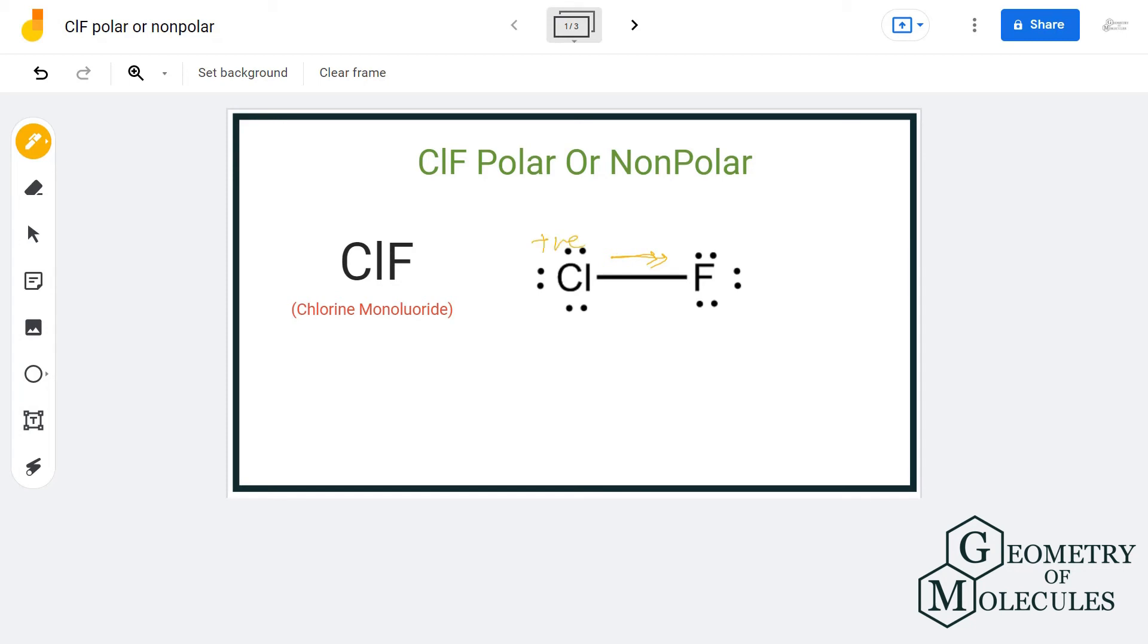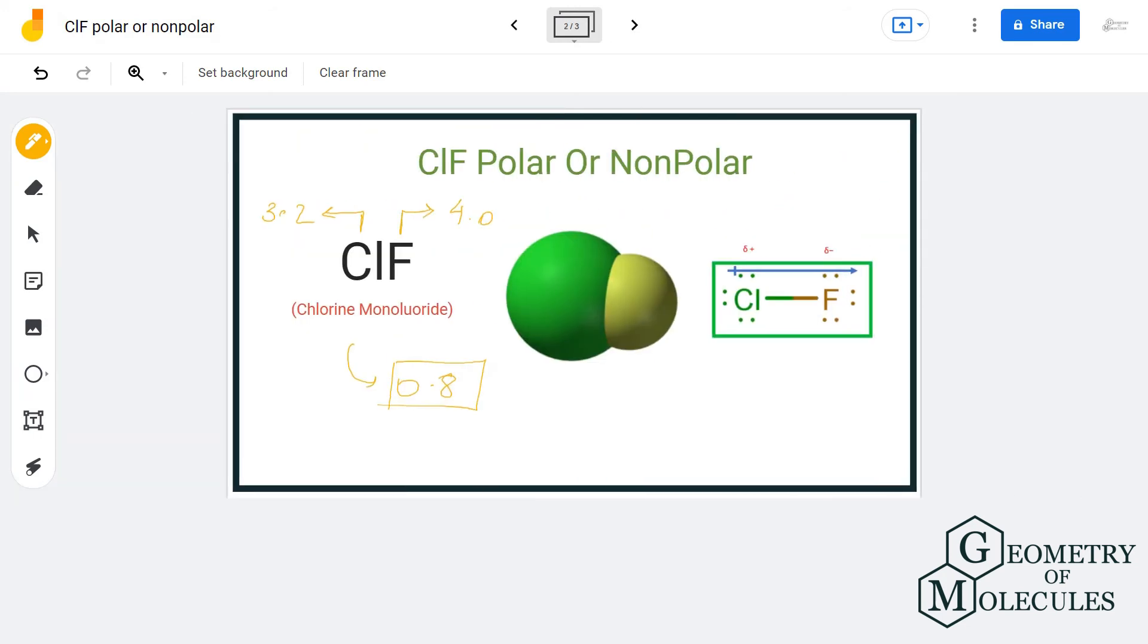The regions around the fluorine atom will have partial negative charges, and the regions around the chlorine atom will have partial positive charges. Since there are poles formed in this molecule, ClF or chlorine monofluoride is a polar molecule.